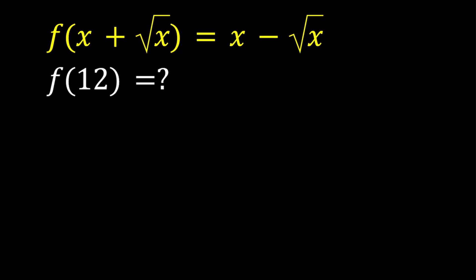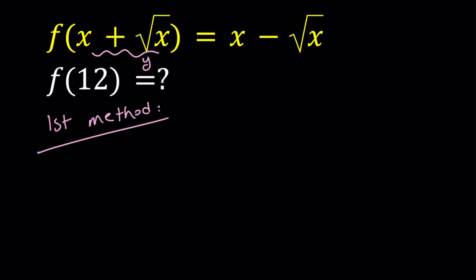We're going to do this in two ways. Let's start with the first method. For our first method, we're going to try to find the general expression for f(x). I'm going to use a different variable — I can't set it equal to x, so let's use y. Let's set x + √x equal to y.